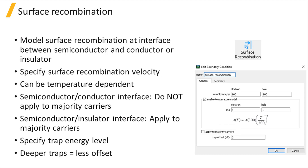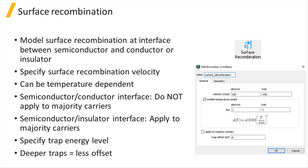Finally, the energy level of the trap states in the surface recombination model can be specified by setting its energy offset from the mid-gap energy level of the semiconductor material. Deepest trap levels, which result in the highest recombination rate, will have a mid-gap energy level, or equivalently, zero offset.